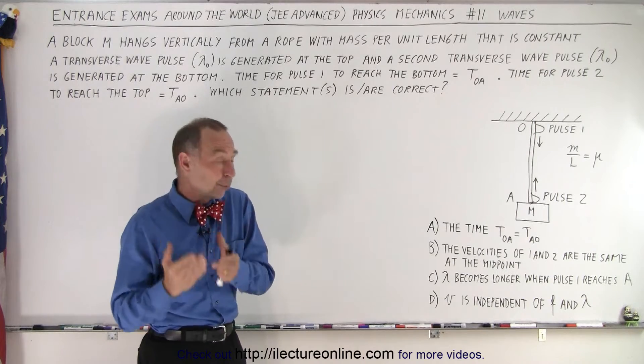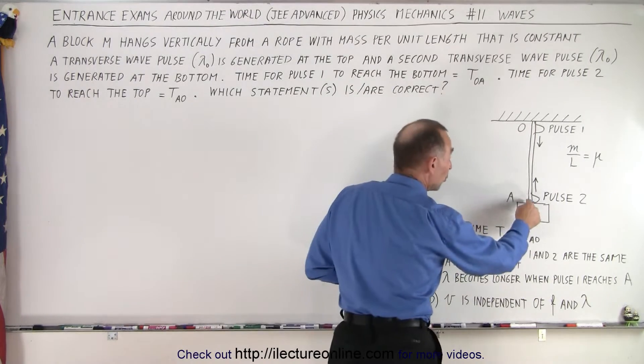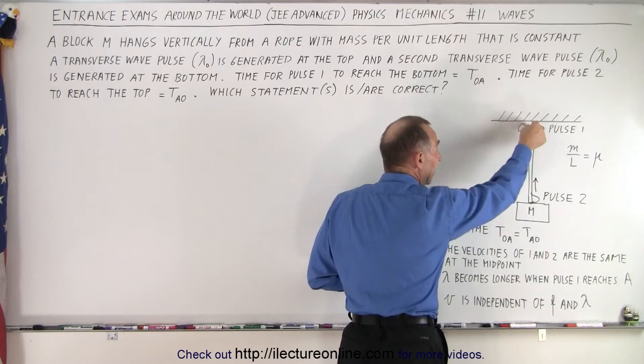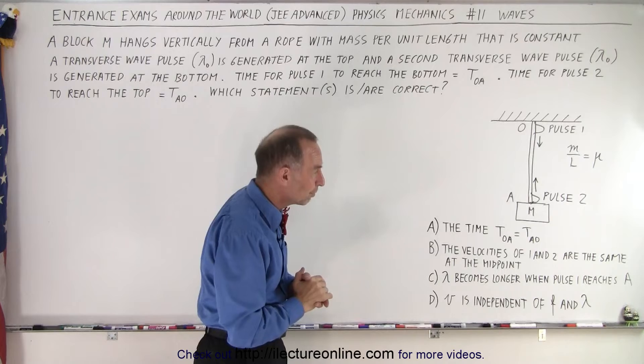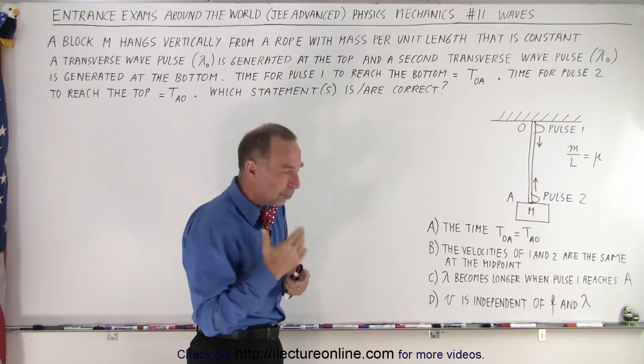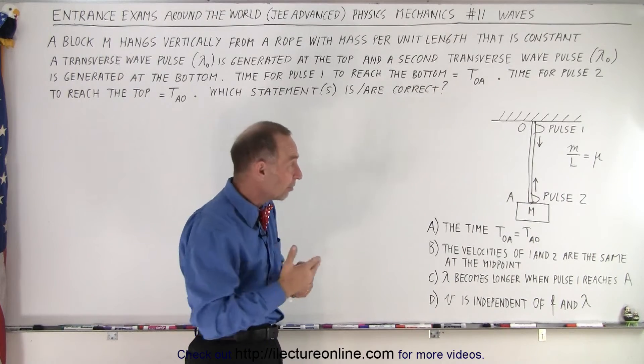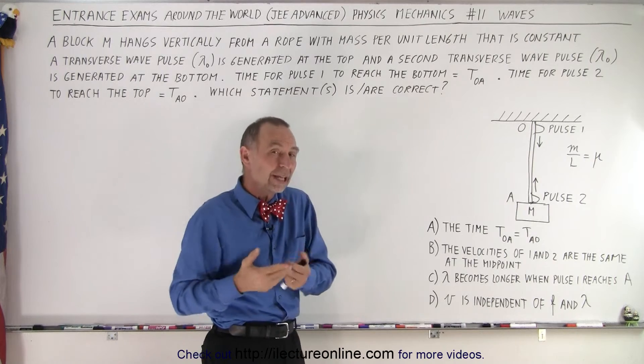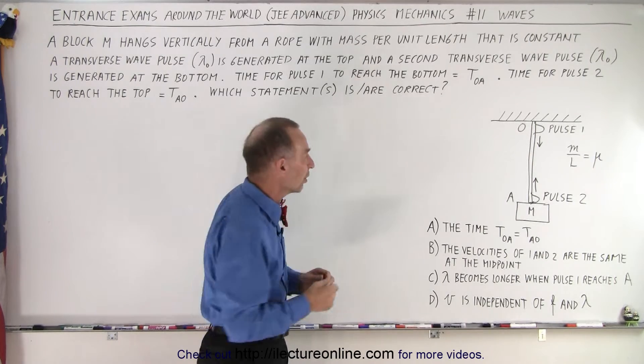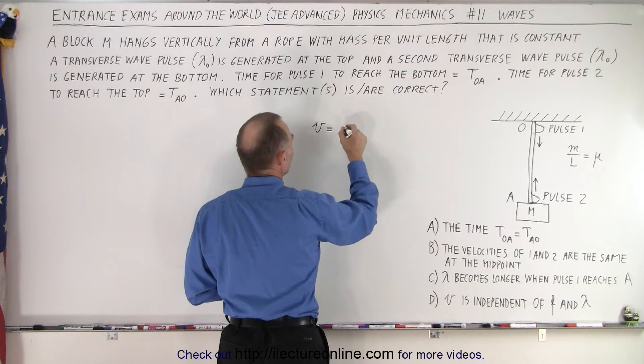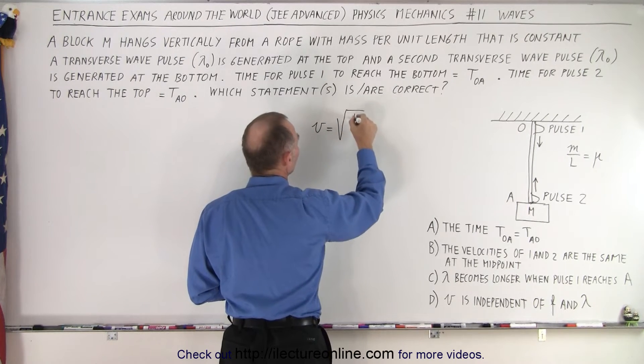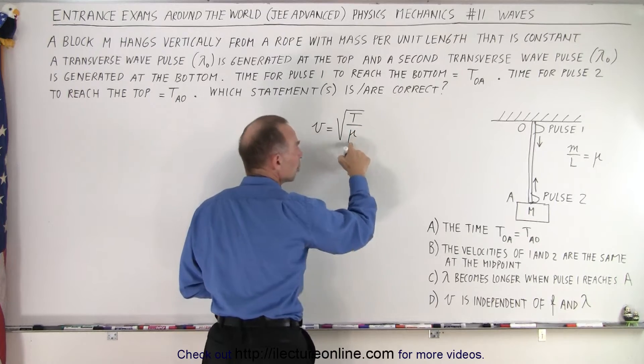First of all, we need to realize that because the rope has mass, the tension will increase as you go further down to the bottom of that rope. We need to realize the equation for the velocity, which is a function of tension and a function of the mass per unit length. The velocity of a wave on a string equals the square root of the tension divided by the mass per unit length mu.